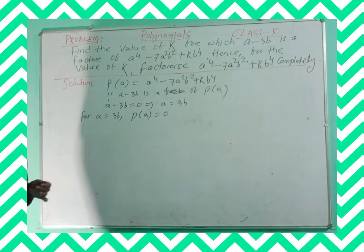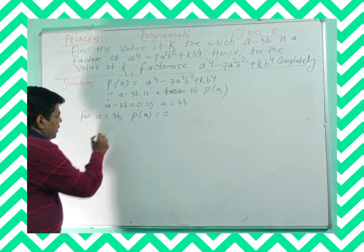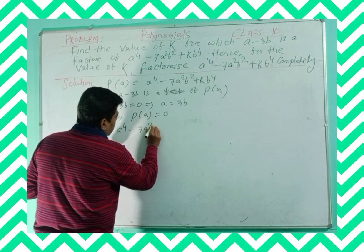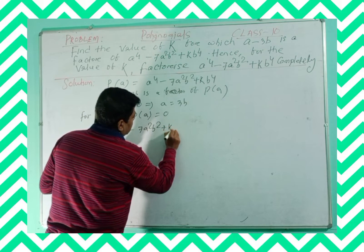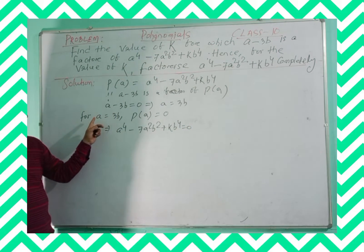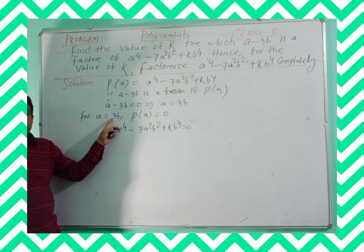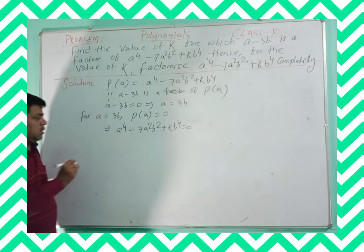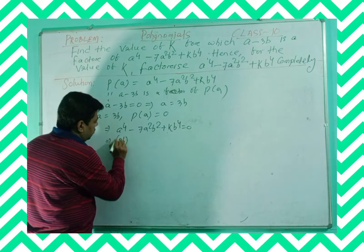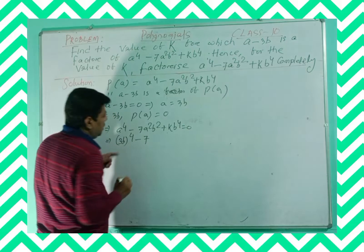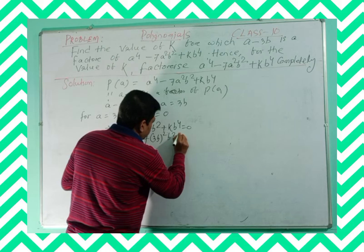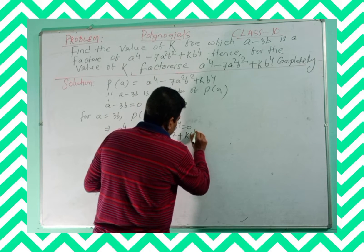As per the factor theorem, that implies a to the power 4 minus 7a squared b squared plus k b to the power 4 is equal to 0. Now you have to replace the value of a. Since a is equal to 3b, in place of a you can write 3b, and it will be 3b to the power 4 minus 7 times 3b squared times b squared plus k b to the power 4 is equal to 0.